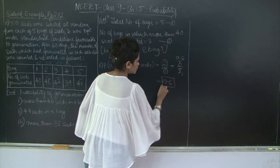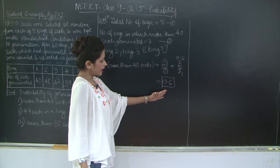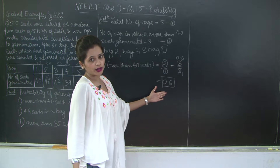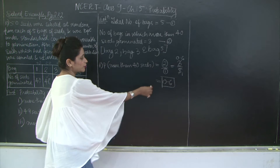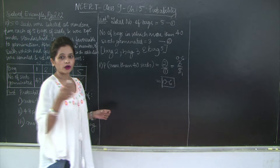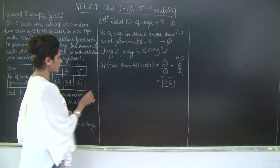This probability of 0.6 is lying between 0 and 1, which confirms it is valid, since we know that all probabilities lie between 0 and 1.